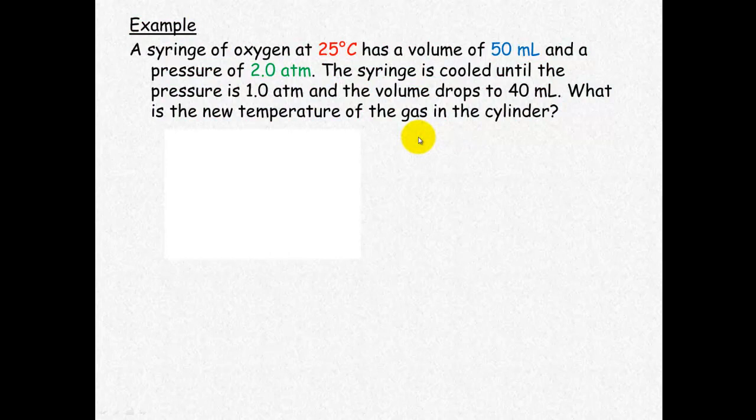So let's look at the important information. The syringe in the initial conditions has a temperature of 25 degrees Celsius, which we convert to Kelvin, which is 298 Kelvin. Volume is 50 ml and pressure is 2.0 atmospheres. So we've got our P1, our V1, our T1.